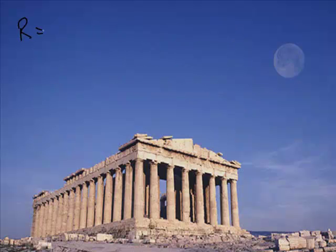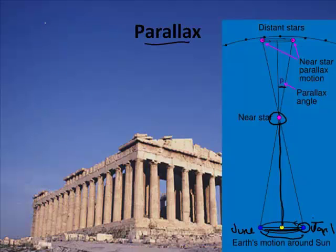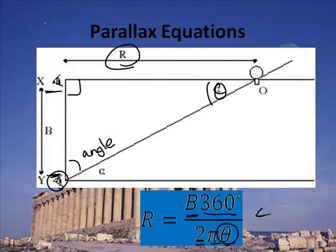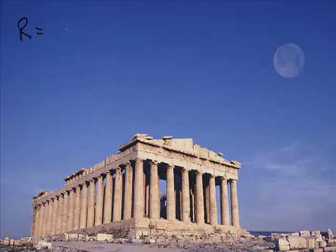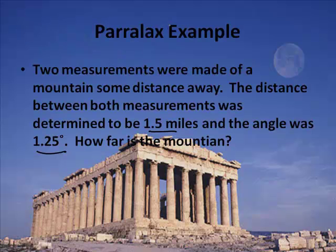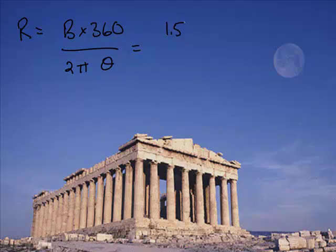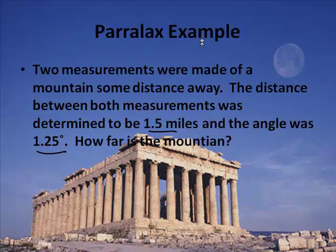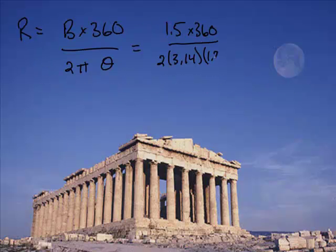Let's do a mathematical problem. r equals b times 360 over 2π times theta. Two measurements were made of a mountain some distance away. The distance between both measurements was 1.5 miles, and the angle was 1.25 degrees. How far is the mountain? So: 1.5 times 360, divided by 2 times 3.14 times 1.25.